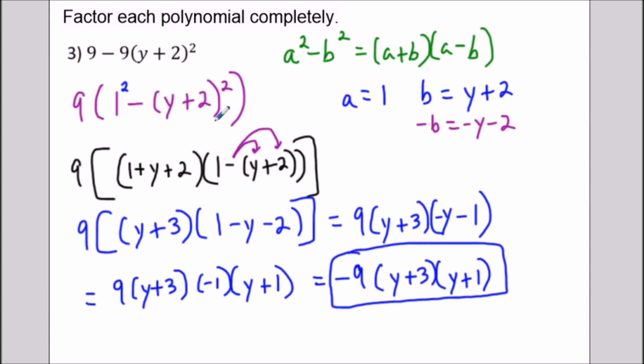But an alternate solution we could have used would have been to multiply this out, distribute the -9, add the 9, and then factor. And you should get the same thing here.